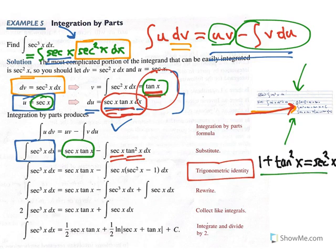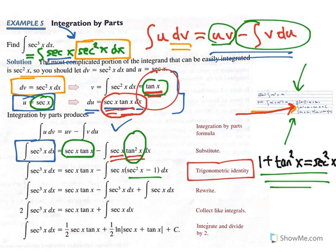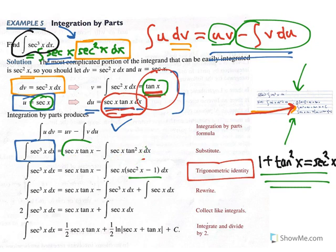There is a trig identity we can use — a Pythagorean identity. We can take tangent squared x and rewrite it as secant squared x minus 1. You might wonder why we do that, but it's because we have an idea of where we want to go. Our ultimate goal is to find the indefinite integral of secant cubed x, and we're expecting a factor of the original integral to appear in our work.